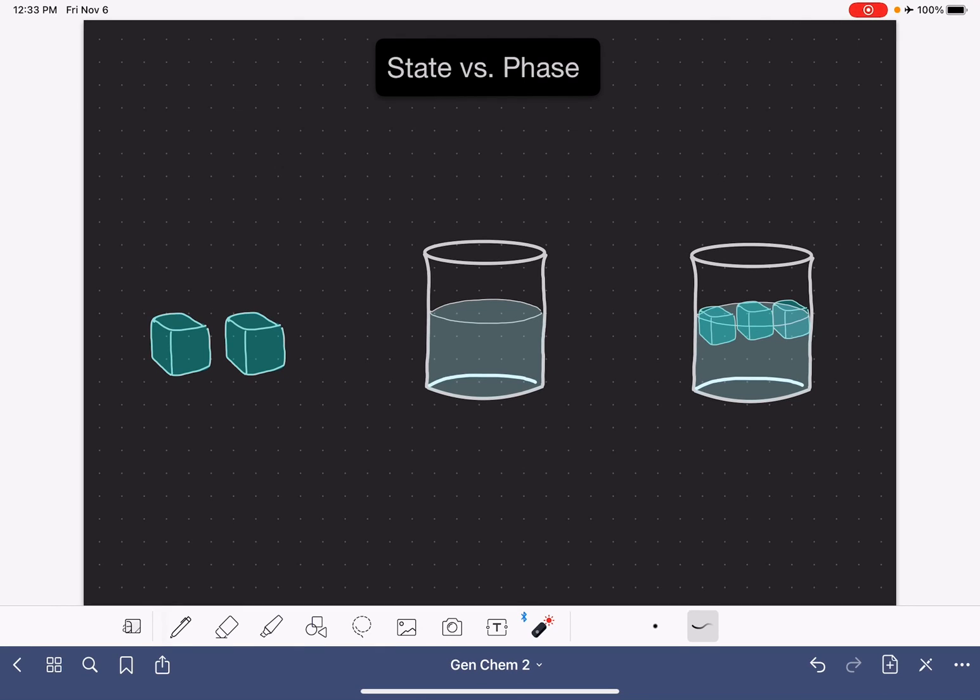Let's talk about the difference between the words state and phase because it's very easy to confuse these two. State is a word that we have used quite a bit. It is used to describe whether or not a substance is solid or a liquid or a gas.